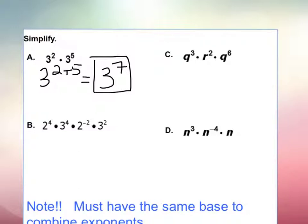Let's look at example B. Remember, and I put a note at the bottom, it must have the same base to combine exponents. So if they don't have the same base, you don't need to combine them. So I'm going to rewrite with the same bases, 2 to the 4th times 2 to the negative 2 power. So I just put the same bases together, multiply by 3 to the 4th times 3 squared.